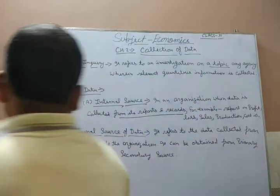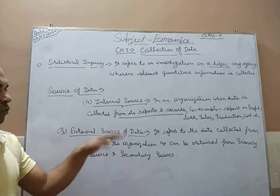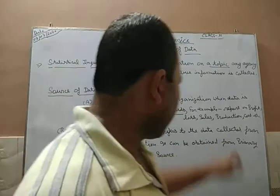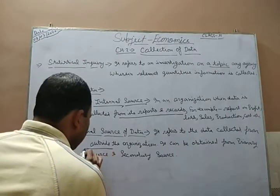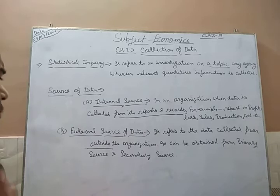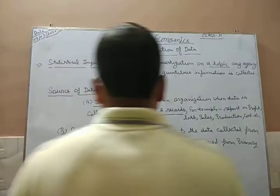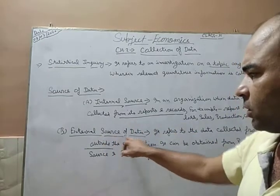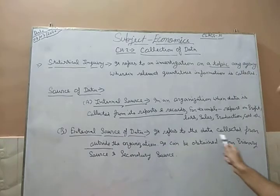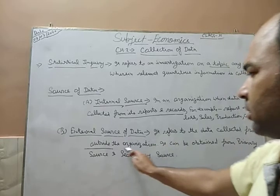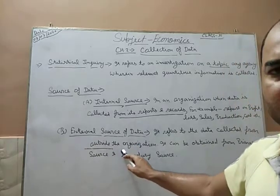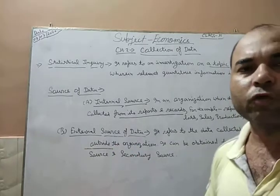Now the second point: external source of data. External source of data refers to the data collected from outside the organization. The keyword for internal source is 'within' — from its reports and records. For external source, the keyword is 'outside the organization.'